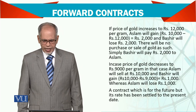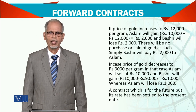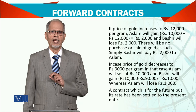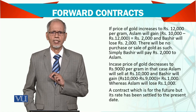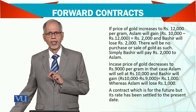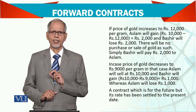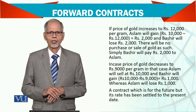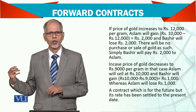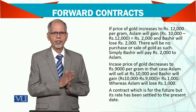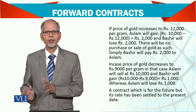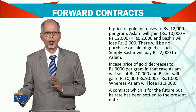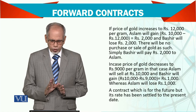If the gold price increases to 12,000, Aslam has locked in 10,000 per gram. If the price increases, the transaction will still occur at the agreed price of 10,000 per gram. Technically, Aslam gains 2,000 per gram in profit, while Bashir will lose 2,000 per gram.